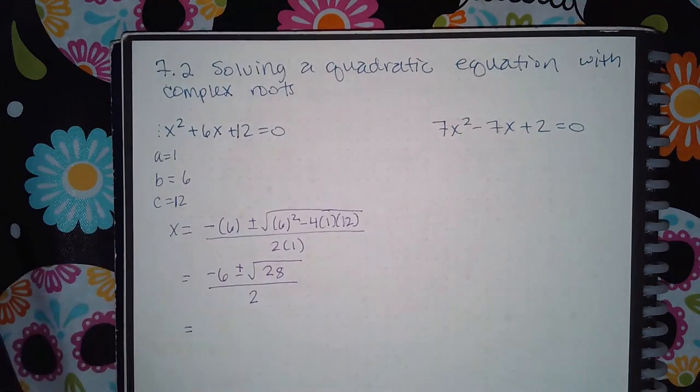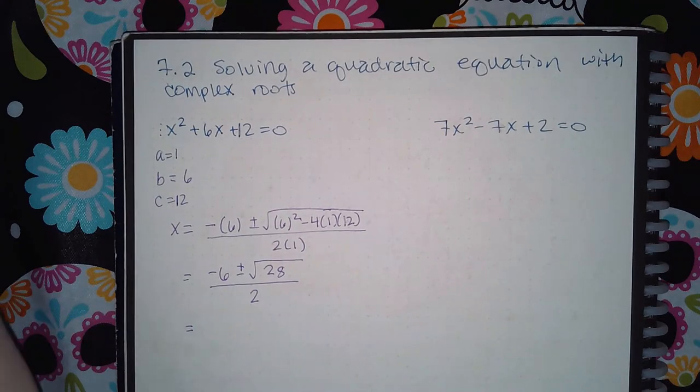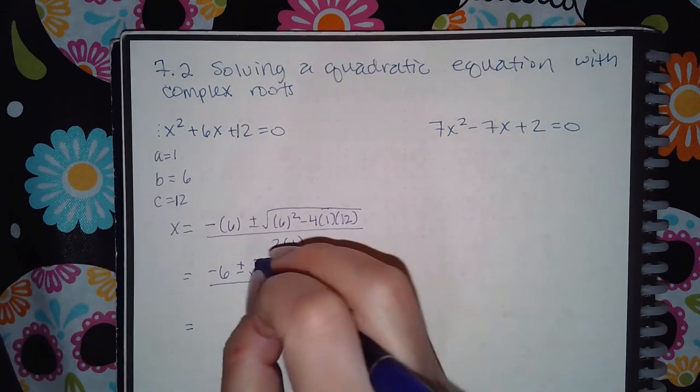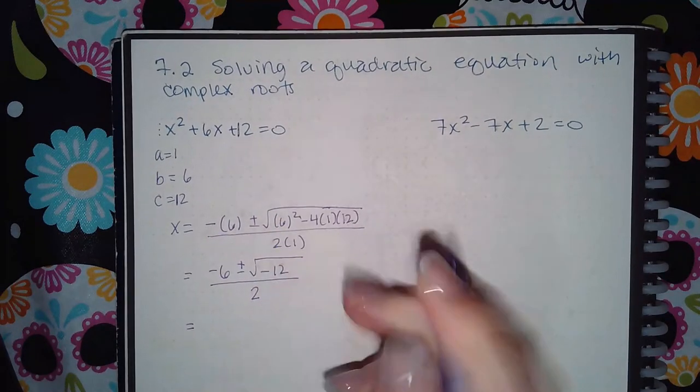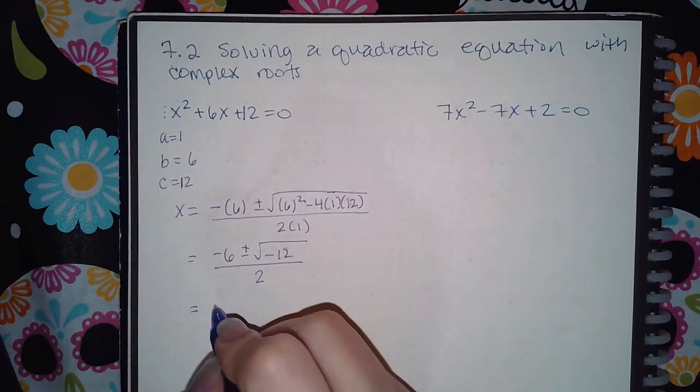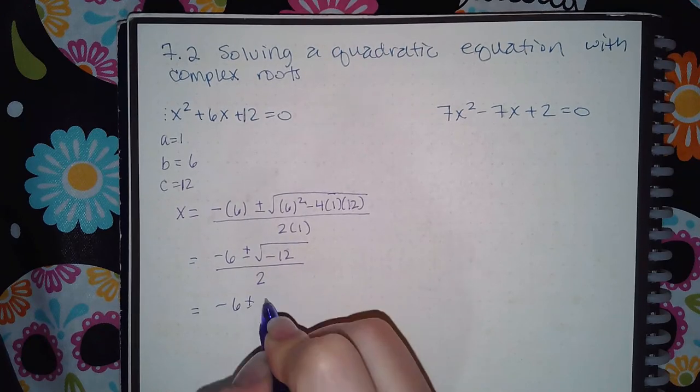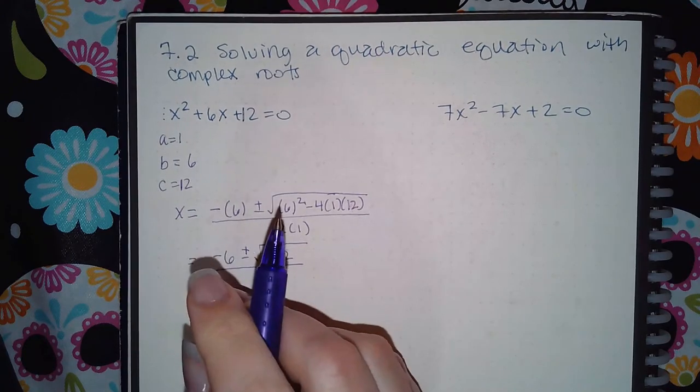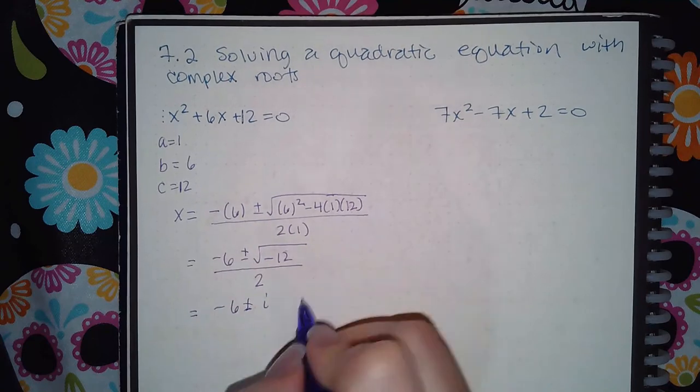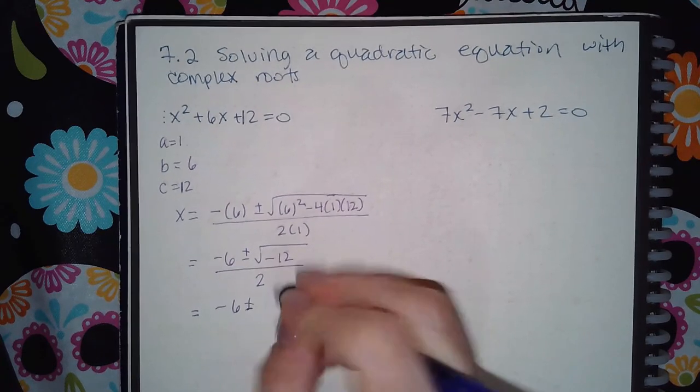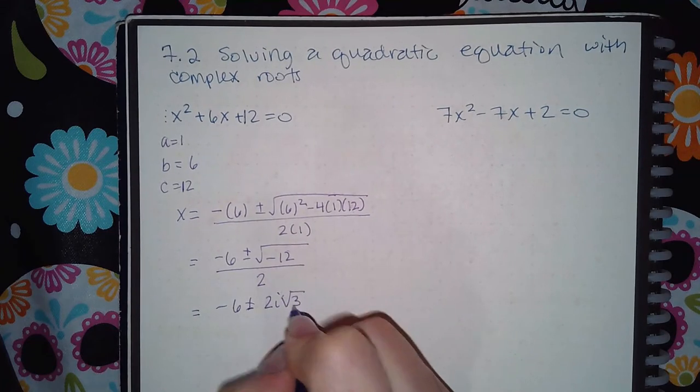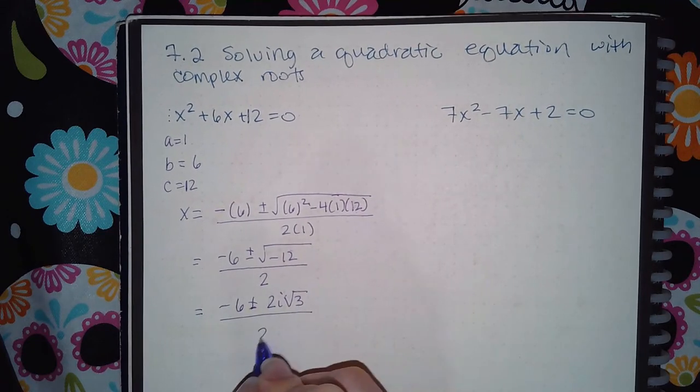Now let me see what I get. Yes, now I get a negative 12 inside here, and then 2 times 1 is just 2. Now the negative will come out as an i and the square root of 12 I'll type in my calculator. It tells me 2 square root 3. But we already know we like the 2 in front of the i and then the square root of 3 over 2.